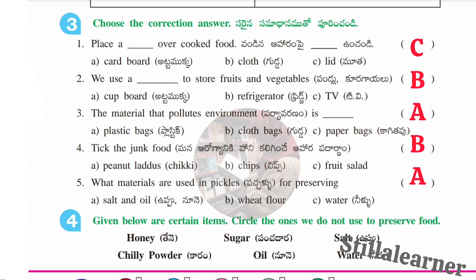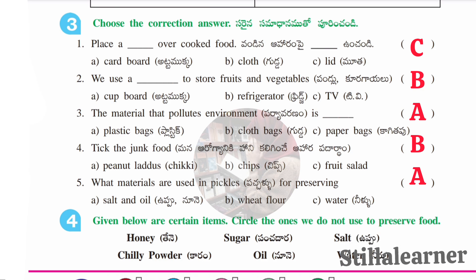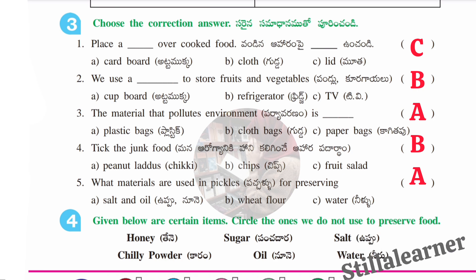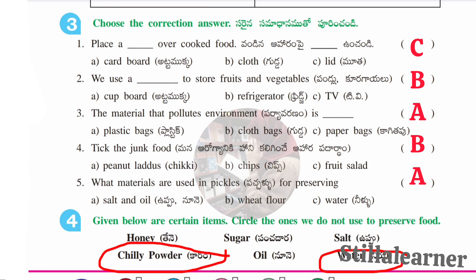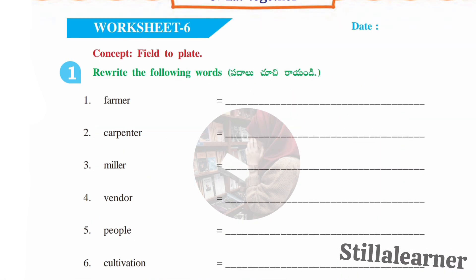The fourth section: circle the items we do not use to preserve food. From the six items given, circle chili powder and water. Now we'll move to Worksheet 6 — the concept is 'Field to Plate.'